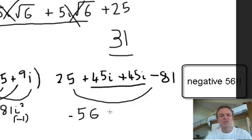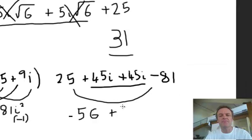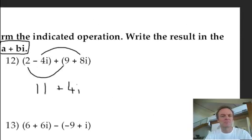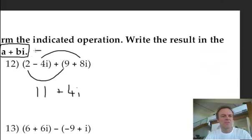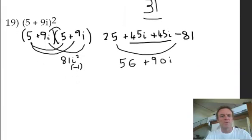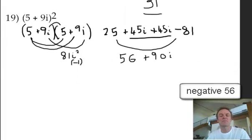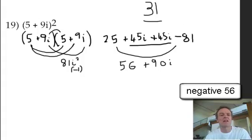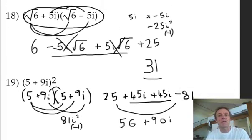And then that is just 90i. So there it is. Again in that form, let's go to the top. a plus bi. In the form a plus bi. So again down to the bottom, don't get dizzy. There we go. So that one is 56 plus 90i. Nothing cancelled there. It did on question 18.